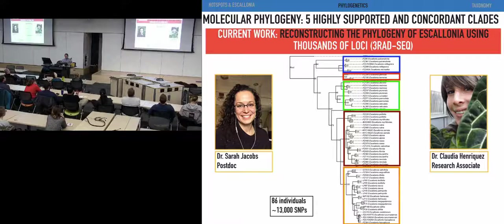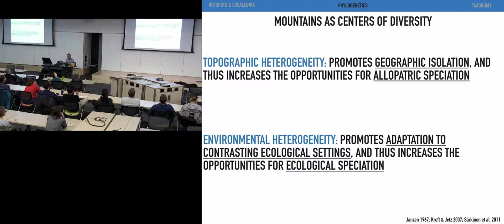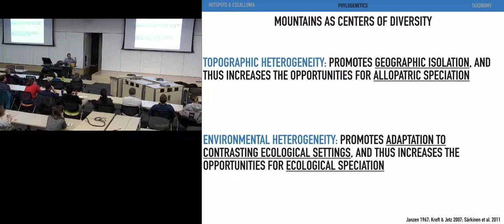With these phylogenies in hand, I was interested in asking questions about potential mechanisms of diversification in mountain ranges. I contrasted and tested two different hypotheses proposed as main drivers of plant diversification in mountain ranges. On one hand, people have suggested that topographic heterogeneity promotes geographic isolation and thus increases opportunities for allopatric speciation — so basically geography is the main driver. In contrast, others have suggested that environmental gradients along elevational gradients promote adaptation to different ecological conditions, increasing opportunities for ecological speciation.